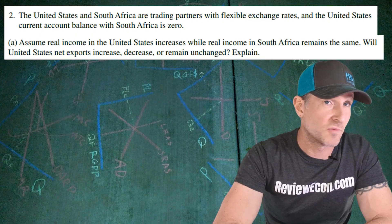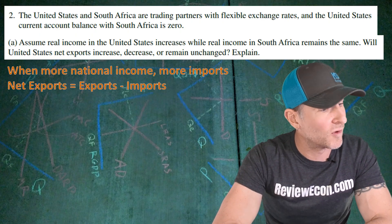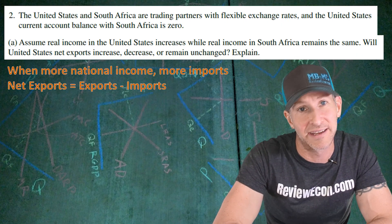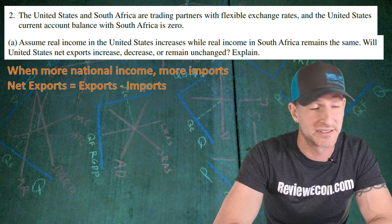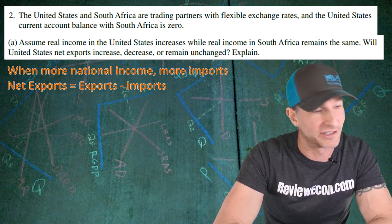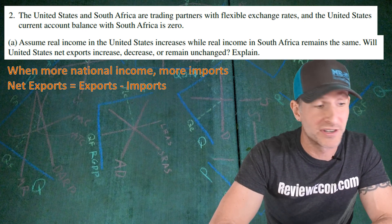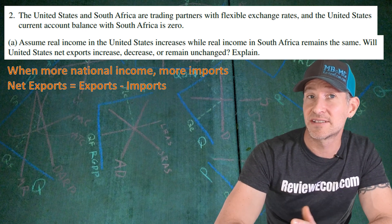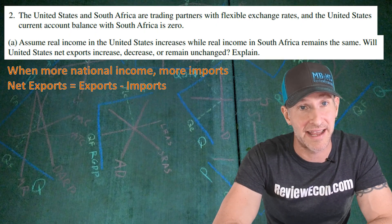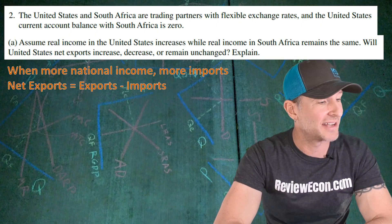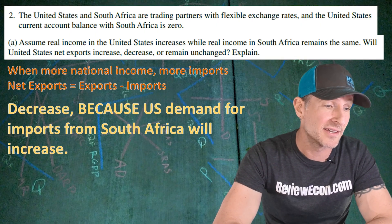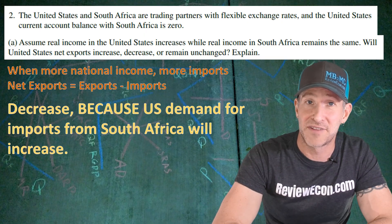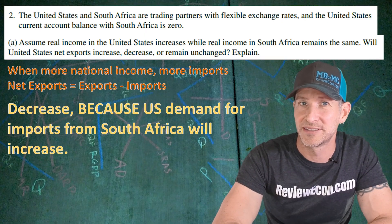In order to answer this question, we need to remember that when a country has more national income, that means citizens within that country are going to buy more of everything, including other countries' goods. And other countries' goods are called imports. Furthermore, the formula for net exports is exports minus imports. So an increase in imports is actually going to decrease net exports. The answer is decrease, because US demand for imports from South Africa will increase. And if you've answered something like that, you get your first point.